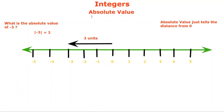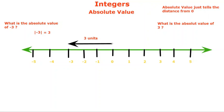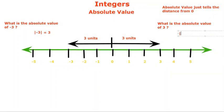So the absolute value of minus three is equal to positive three. Now let's take another question: what is the absolute value of plus three? We again check the distance of three from zero — one, two, and three — so three is three units away from zero. The absolute value is represented with vertical bars on each side, and the answer is plus three.